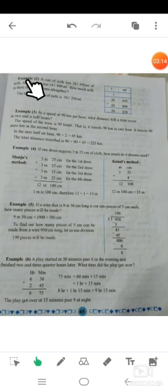Problem set 2. A can of milk has 20 liters 450 ml of milk, and another can has 18 liters 800 ml. How much milk is there in two cans altogether? Here, liter is the larger value than ml. In the first case, 20 liters and 450 ml. In another case, 18 liters and 800 ml.